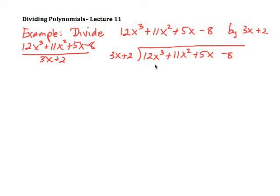Now, what we do is we say to ourselves, we want to get rid of this 12x cubed. So what do I multiply 3x by to get 12x cubed? Well, it would be 4x squared. And when I do that, I'll get a 12x cubed plus 8x squared. So 3x by 4x squared gives me 12x cubed, and 2 by 4x squared gives me 8x squared. Put a line under it and now subtract. I'll get a 0 here, which is our objective, and I get 11x squared minus 8x squared is 3x squared.